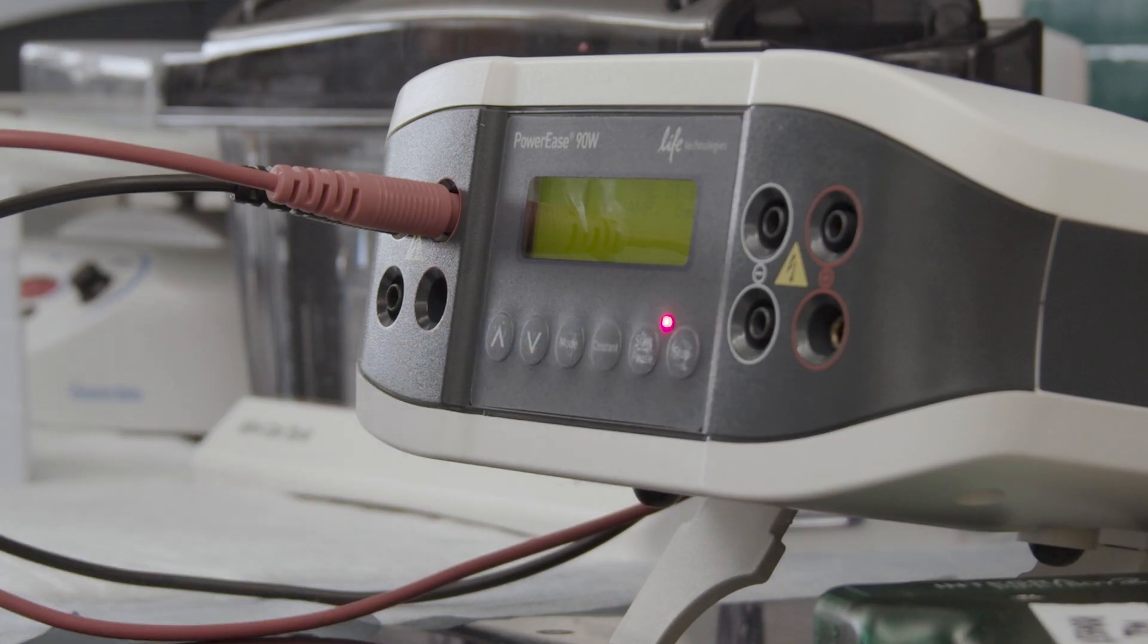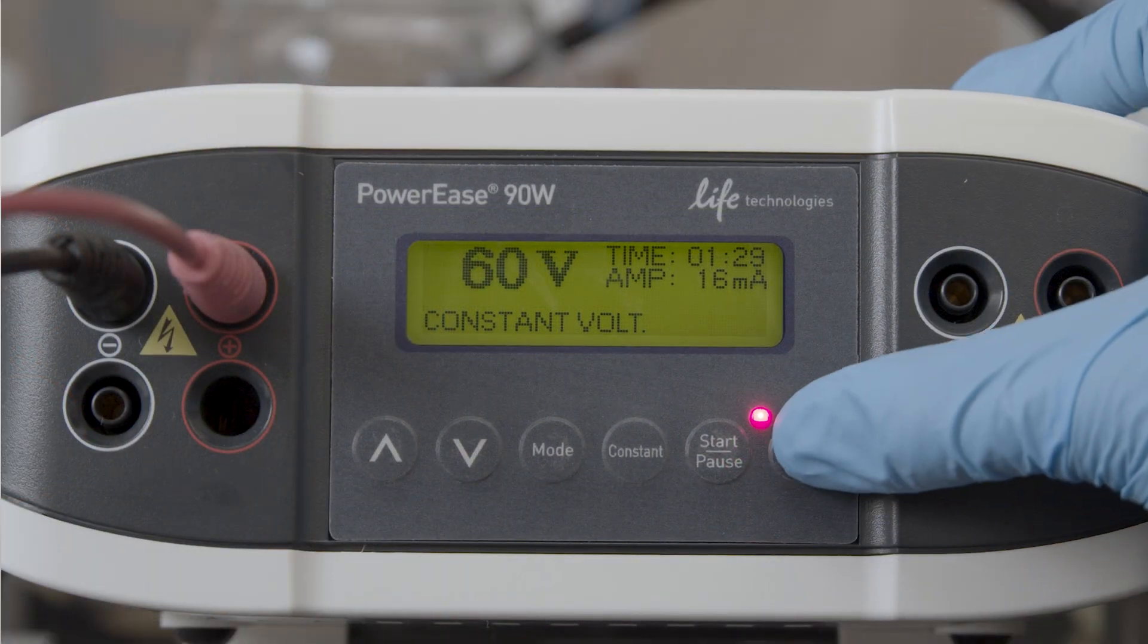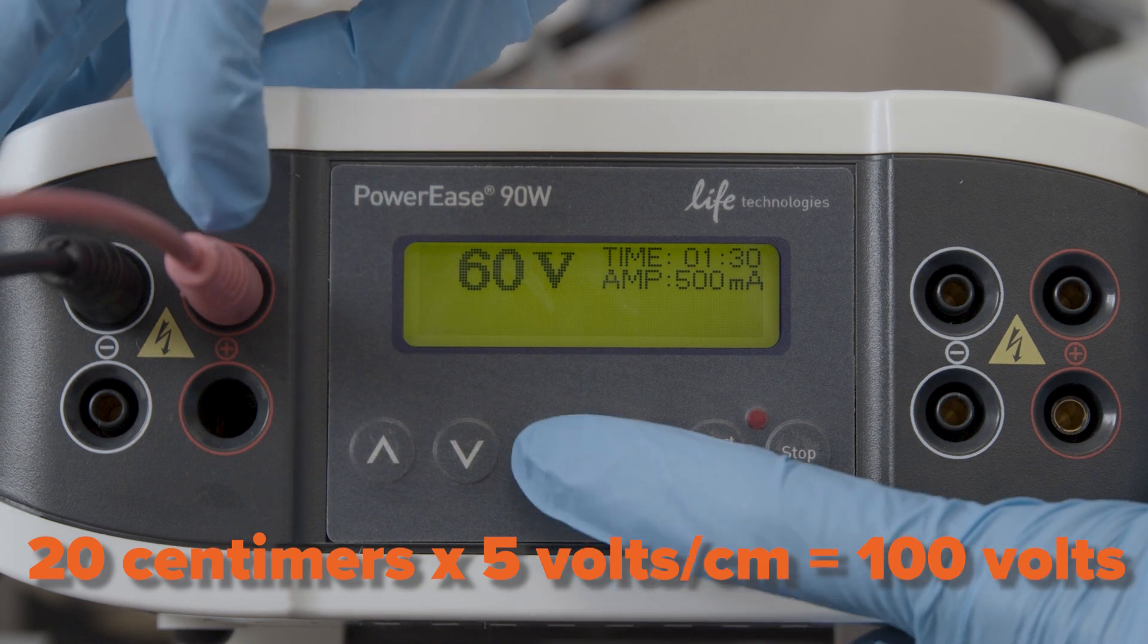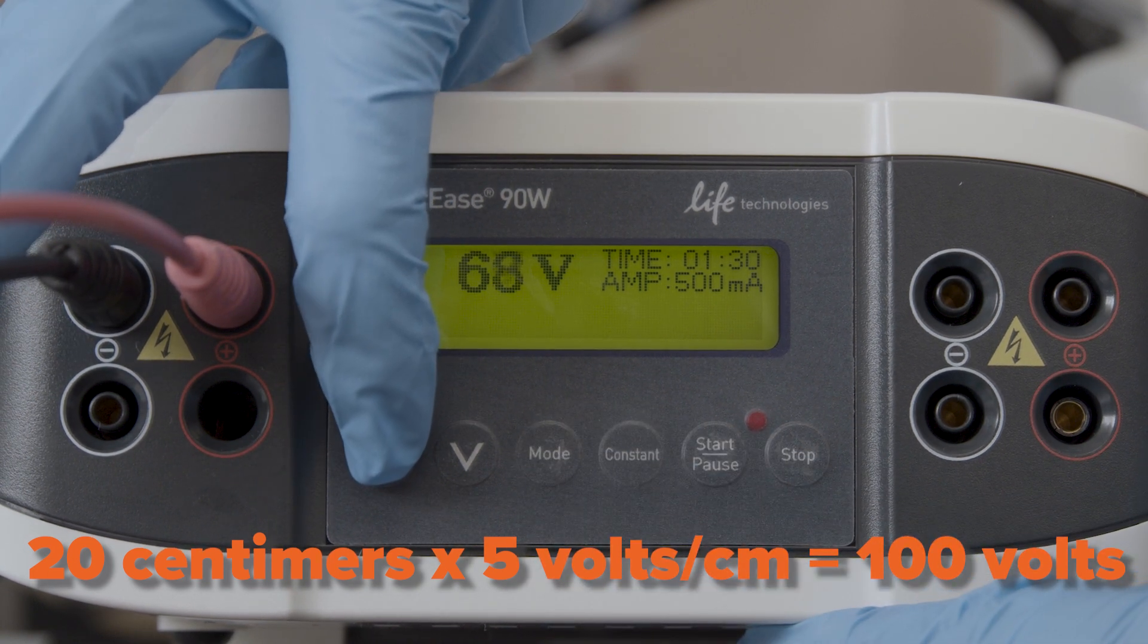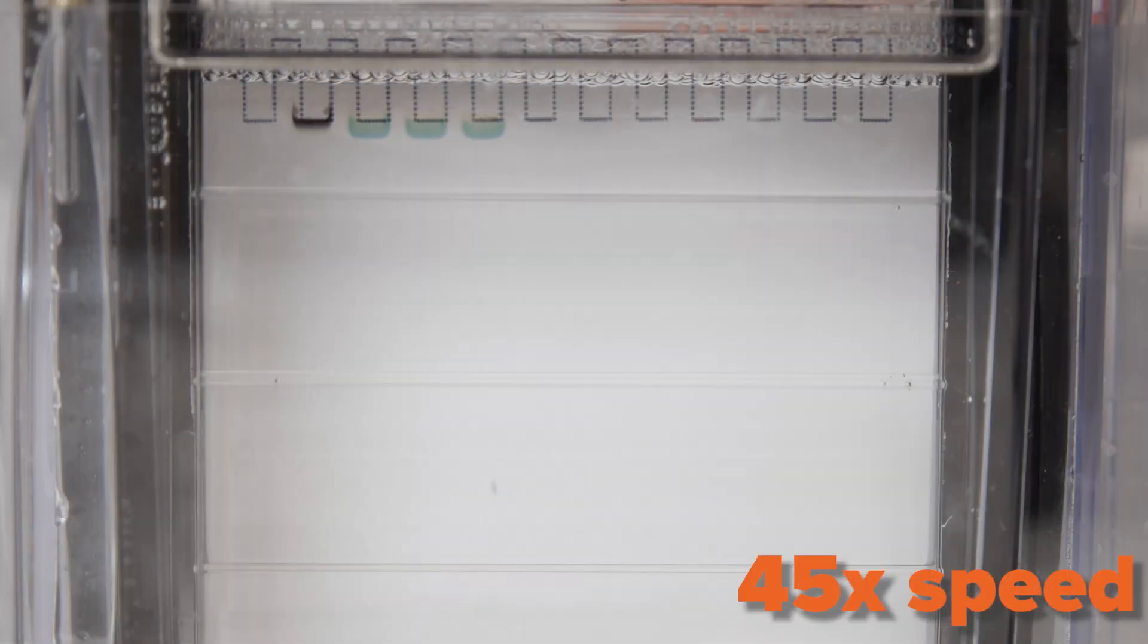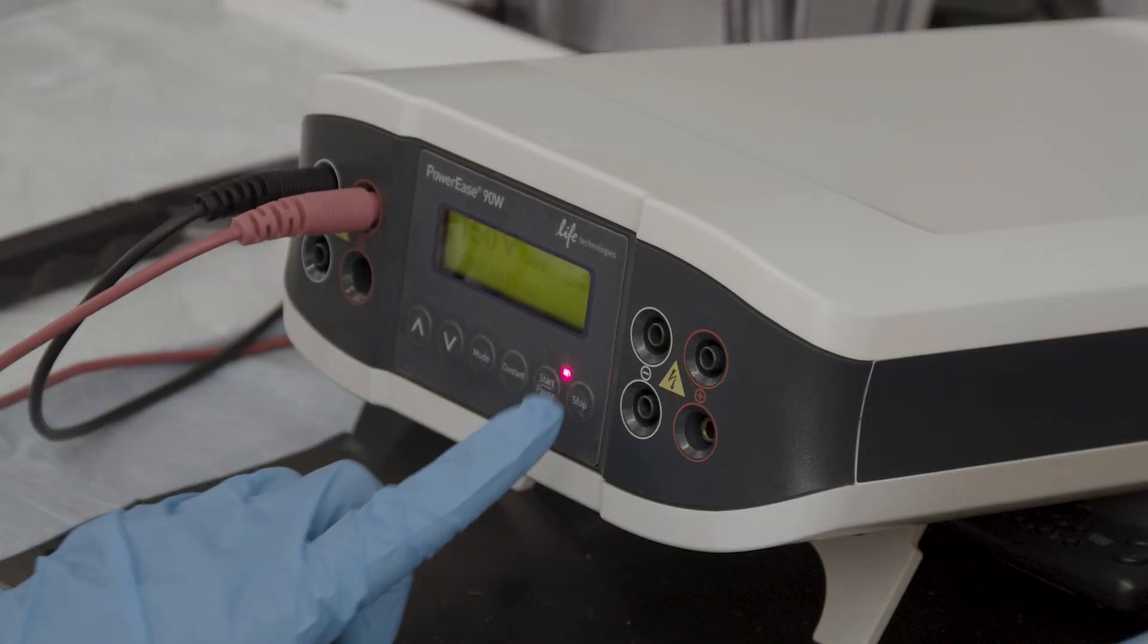Run the gel at a low voltage, usually 50 to 60 volts, for 30 minutes. This allows the samples to line up and enter into the resolving gel. After 30 minutes, increase the voltage to a final voltage of 5 to 15 volts per centimeter of gel. The pre-stained protein standard will be visible on the gel as it runs. Watch it closely and do not run your protein off the gel. When the protein standard has separated to the desired degree, one that will allow you to get good visualization of your protein, turn off power to the gel.